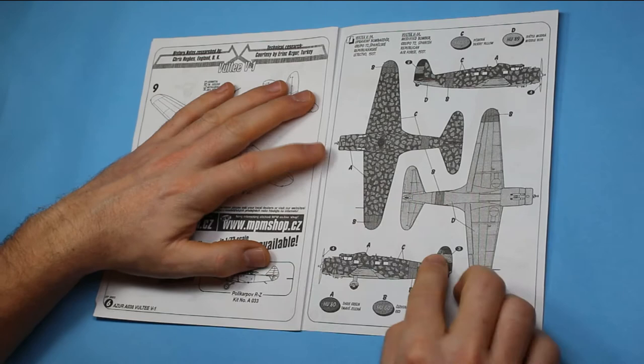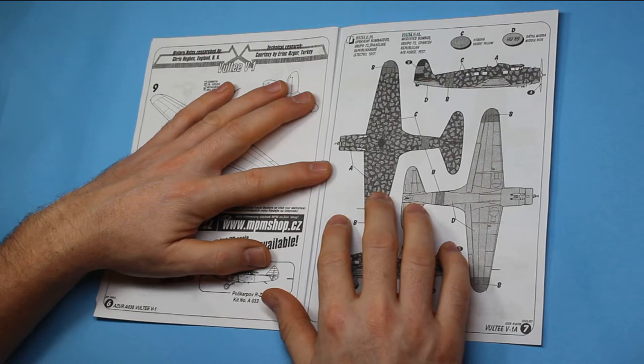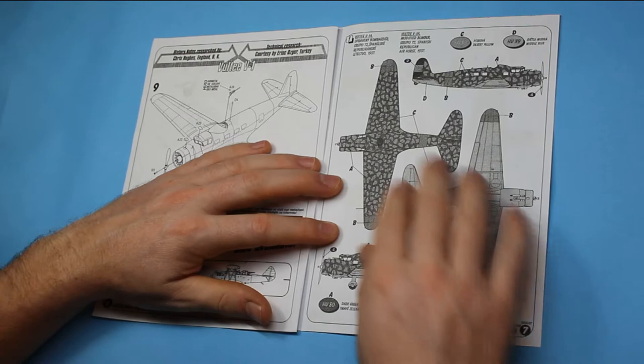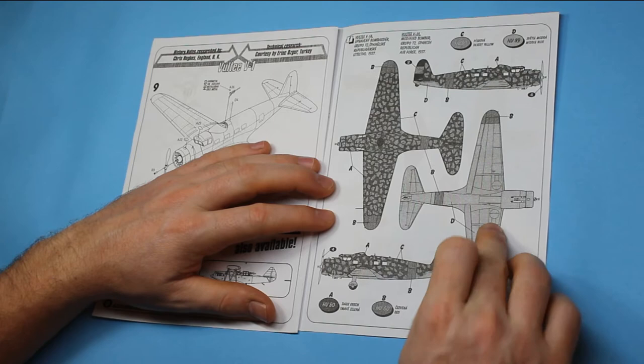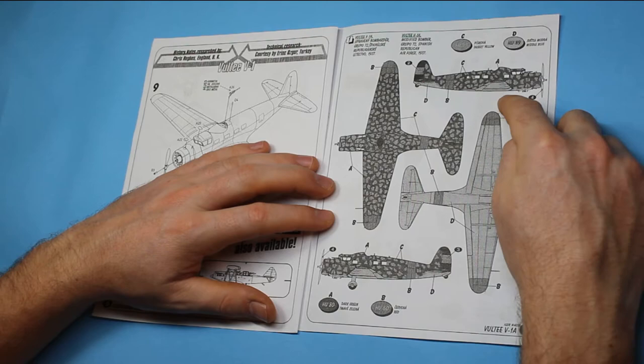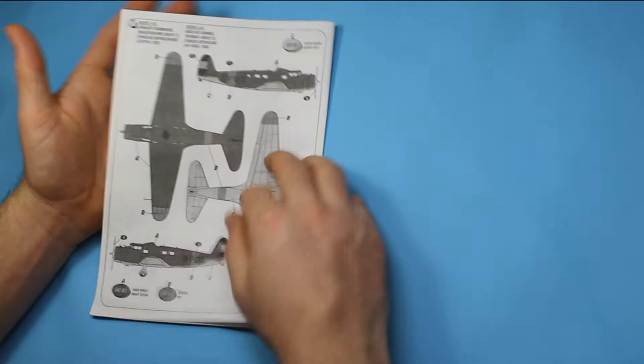And we've got two marking options. The first one here is the camouflage pattern which is quite impressive which is the modified bomber Grupo 72 Spanish Republican Air Force 1937 and that is a dark green overall with desert yellow spots marking all the way across it with middle blue underneath and red air recognition markings there with a fuselage band and wingtips.